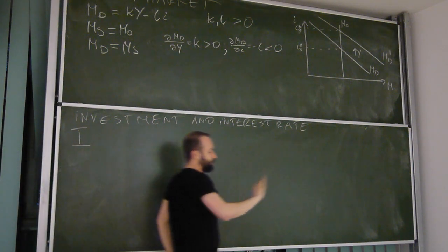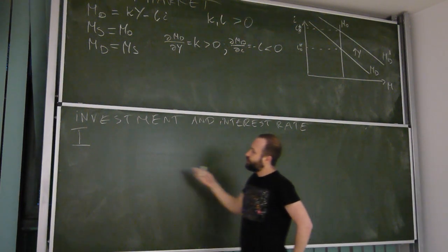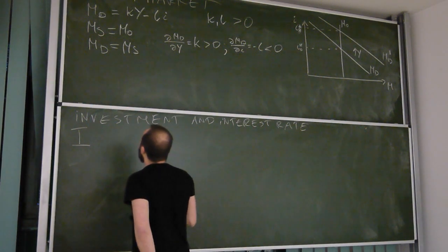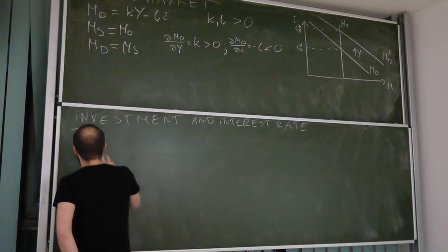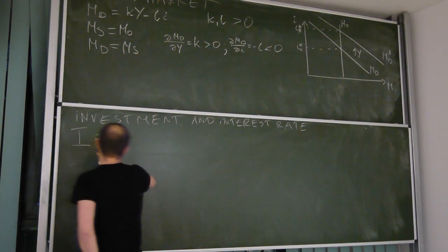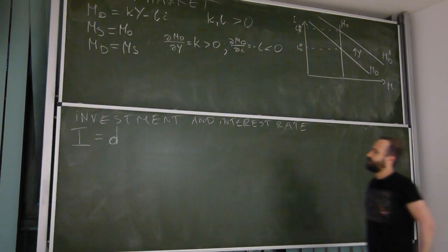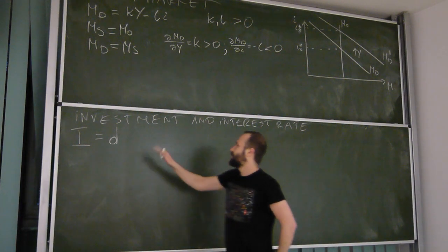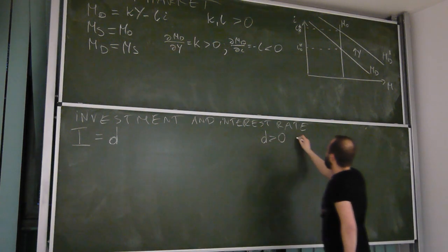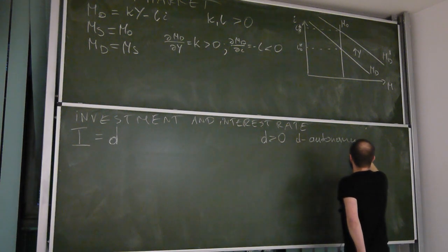So look, thus far we were assuming that investments are given exogenously, we're not explaining them. Now we're going to derive a connection between investment and interest rate. Look, first let's assume that, not taking into consideration interest rate at all, we would get some level of investment d. Let this d be positive, and let's call d autonomous investment.